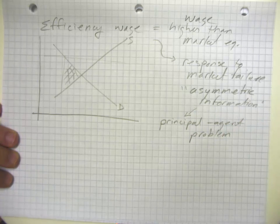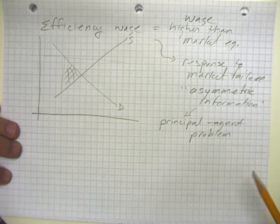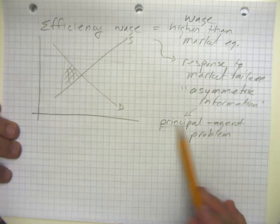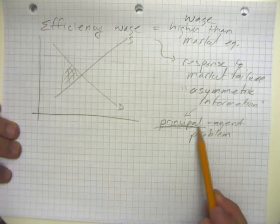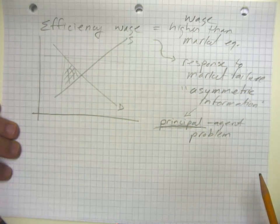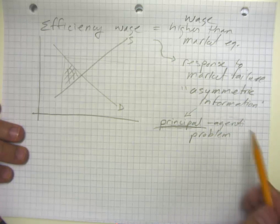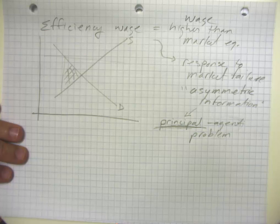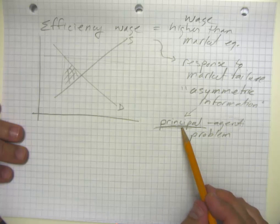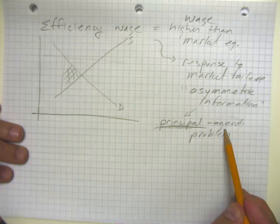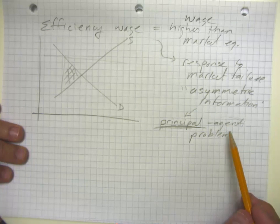And so this in particular is one species of asymmetric information known as the principal-agent problem. If you've taken business law, you'll have recognized some of these terms. The principal is the person with decision-making rights whose interests are supposed to be represented. The agent is who they hire to act on their behalf. But of course, a lot of times, the principal has a hard time knowing whether or not the agent is actually acting in their best interest.